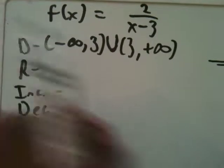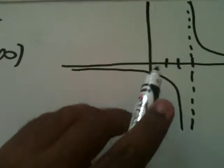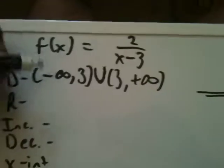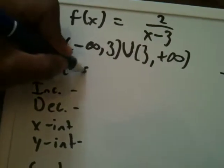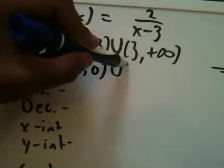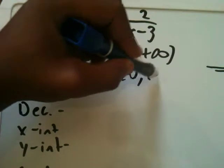The range works the same way. Is there anything that y can't be? And you see here that y can't be zero. So it's going to be negative infinity to zero, open, union zero to positive infinity.